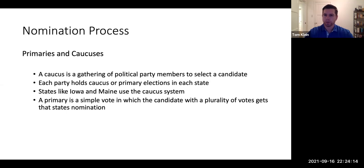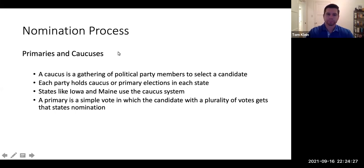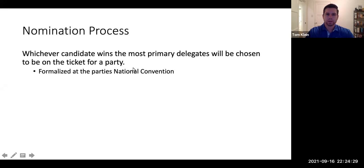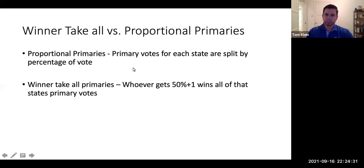I'm not really concerned with the details of a caucus election, but I do want you to know that the primary and caucus elections are how each party chooses their candidate to represent them in the general election. So there are two different types of primary elections. Most states use a winner-take-all primary. Some use a proportional primary.